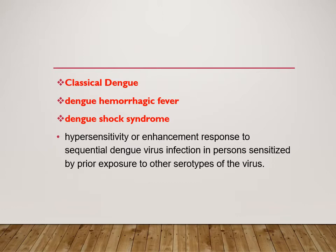This occurs because of a hypersensitivity reaction. Infection with one serotype produces two types of antibodies: protective (neutralizing) antibodies against that serotype, and non-neutralizing (non-protective) antibodies against the other serotypes. When the patient is later infected with a different serotype, these non-neutralizing antibodies fail to neutralize it, instead triggering an immunological reaction that can lead to bleeding or shock.